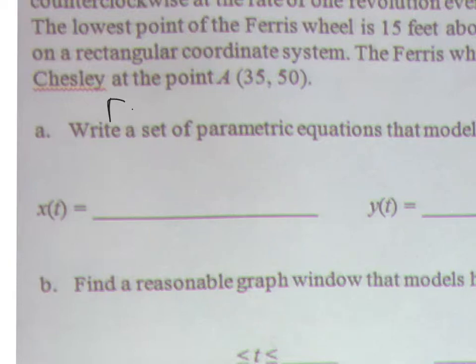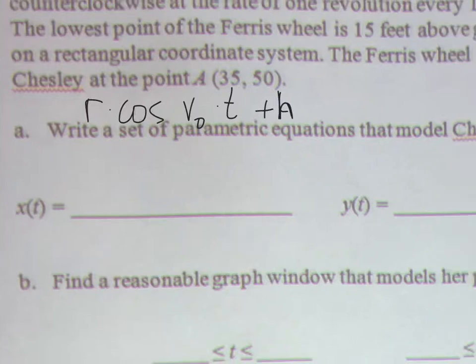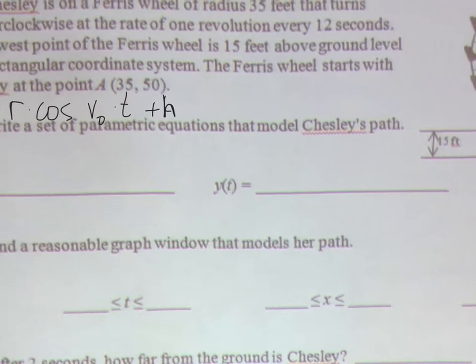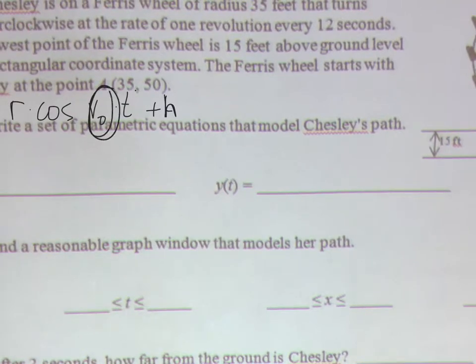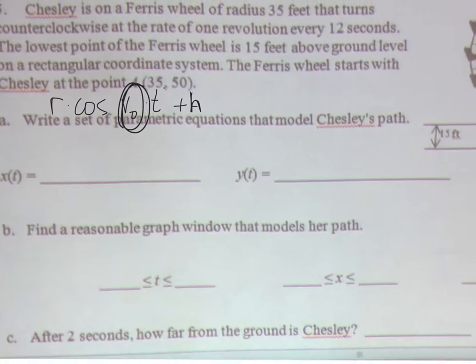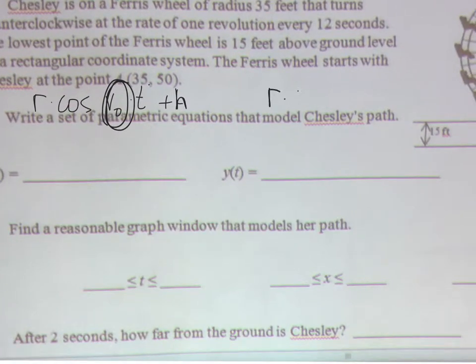r times the cosine of the angular velocity times time plus h, the center of the circle. There is v naught, there is time, so we'll leave it like that for now. And the y is r times the sine of the angular velocity times time plus k, the y value of the center.